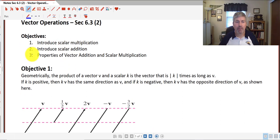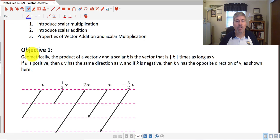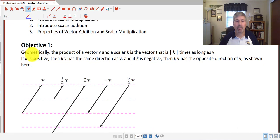In our first objective, we're going to take a look at the product of a vector v and a scalar k. This is a vector that is the absolute value of k times as long as v. And if k is positive, then kv has the same direction as v. And if k is negative, then k times v has the opposite direction of v.